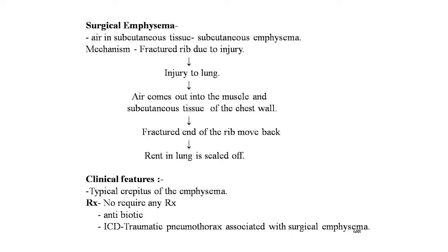Surgical emphysema simply means air in the subcutaneous tissue; it is also called subcutaneous emphysema. The mechanism: fractured rib ends are forced into and injure the underlying lung, through which air escapes into the muscles and subcutaneous tissues of the chest wall. The rib ends then move back to normal position and the rent in the lung is sealed. If the rent persists, it is called traumatic pneumothorax. Surgical emphysema should not be confused with mediastinal emphysema, which is a sequel of rupture of the bronchus or esophagus — in that condition, emphysema is first noticed in the neck. Clinical features: mainly pain in the chest due to rib fracture. Treatment: no specific treatment required; antibiotics should be started. If traumatic pneumothorax is associated, intercostal drainage — water-seal drain — via the second intercostal space should be performed.